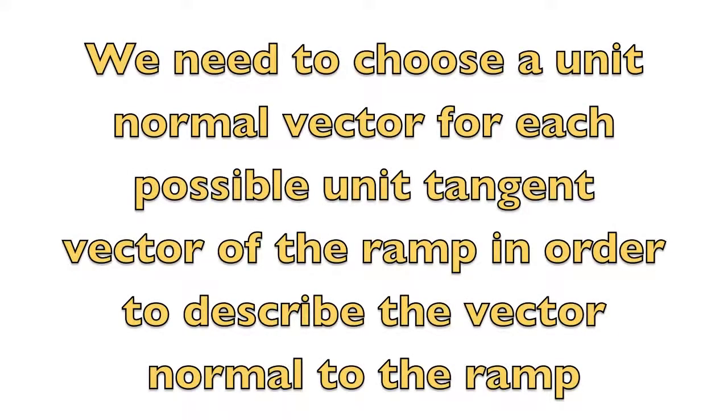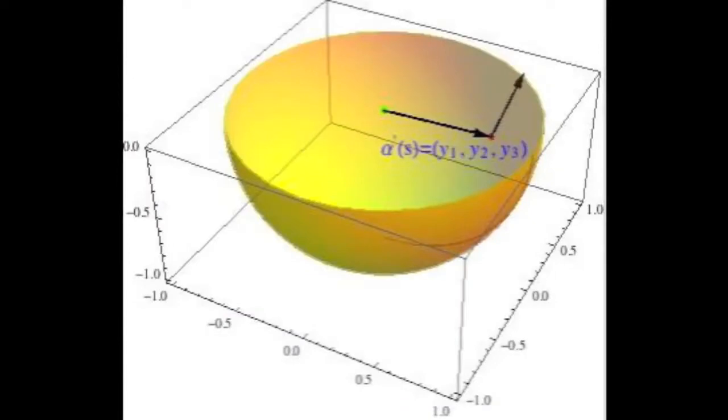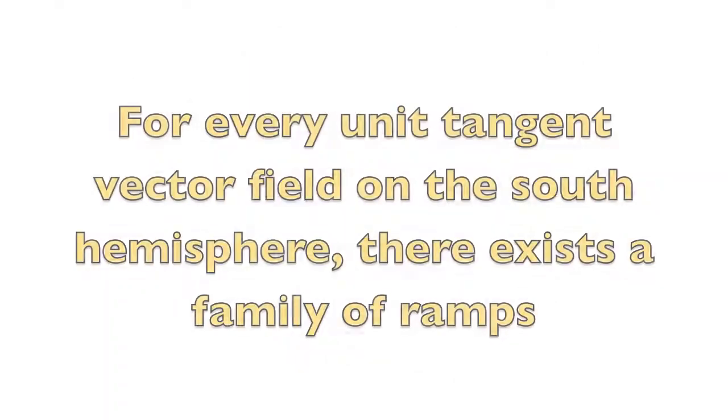We have that if we choose a unit normal vector for each possible unit tangent vector of the ramp, this is, if we pick a continuous tangent vector field on the south hemisphere, then there exists a family of ramps given by an ordinary differential equation.